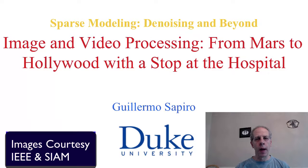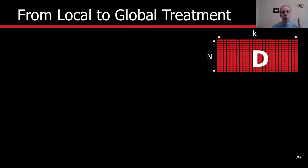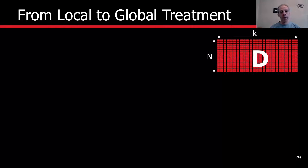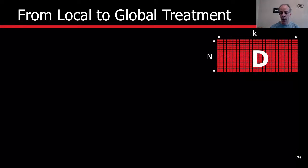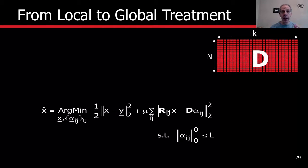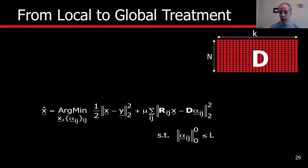Hello and welcome back. It's time now to present examples of sparse modeling in image processing. Before we do that, we have to do one more thing. Remember what we have: a dictionary of k elements, k atoms, and every atom has n dimensions. What are basically the signals that we are going to process? That's what we need to discuss for just one minute.